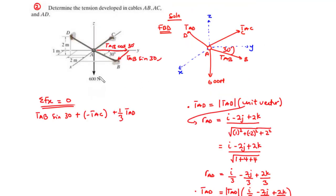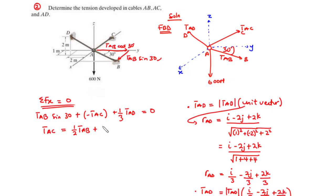The 600 Newton force is directed along the Z axis, so it has no X component and no Y component. Setting the sum equal to zero and transposing, we get Equation 1: TAC = (1/2)·TAB + (1/3)·TAD.